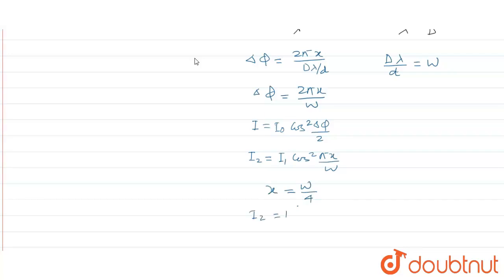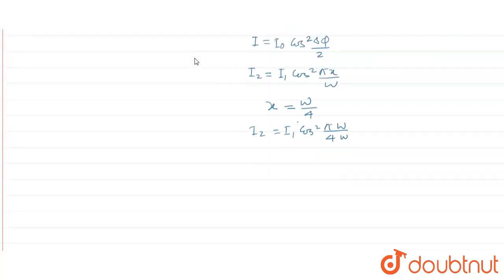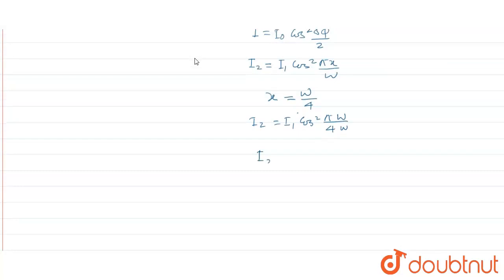Putting in the value where x is given as ω/4 (one-fourth of fringe width): I2 = I1 cos² (π(ω/4) / ω). This comes out to be I2 = I1 cos² (π/4). Therefore, I2 = I1 × (1/2). That means I1 upon I2 is equal to 2.